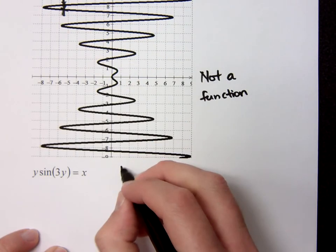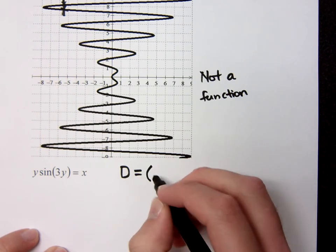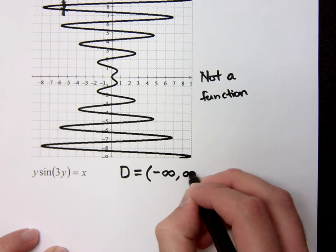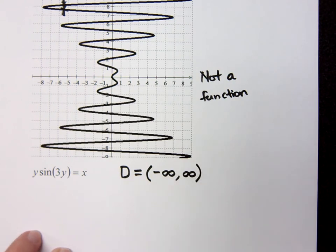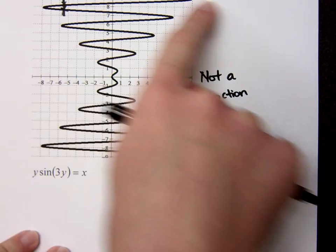It'd be from negative infinity to infinity. It'd be all real numbers, right? It's going to take all real numbers in the X to capture everything that's going on here with that picture.